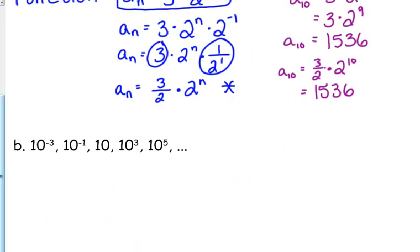Let's do one more. This one looks a little weird because it's not just numbers multiplied by each other. It's kind of like we're looking at scientific notation here. We've got 10 to the negative 3, 10 to the negative 1, 10, 10 cubed, and 10 to the 5th. Does anybody see what we're multiplying by every time? What does 10 cubed equal? 10 cubed is 1,000. So how do we get from 10 to 1,000? What do we have to multiply by? A hundred.